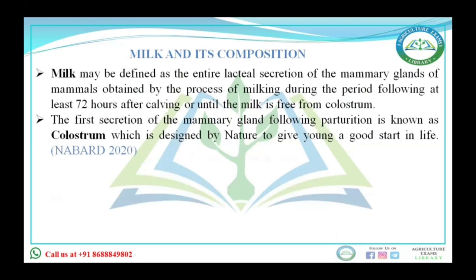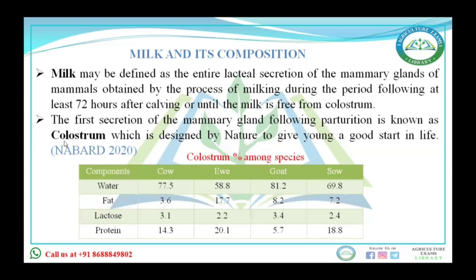Today we are going to discuss milk and its composition. What is milk? Milk is a complete lacteal secretion by the mammary gland of mammals, obtained by the process of milking, during the period at least 72 to 75 hours after calving, or until the milk is free from colostrum. Colostrum is the first secretion of the mammary gland after parturition — parturition is the act of giving birth — and it is of very high nutritive value for the young ones or calf.